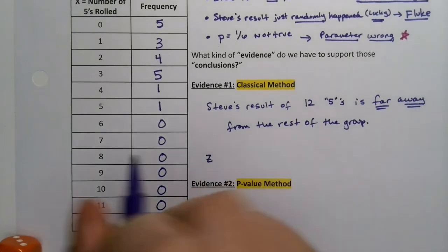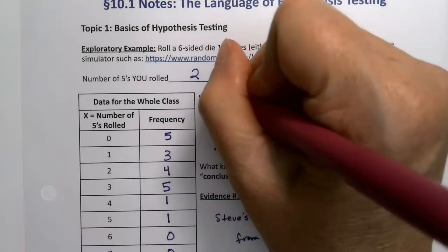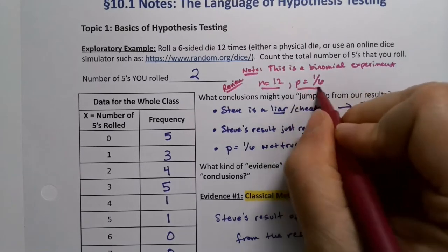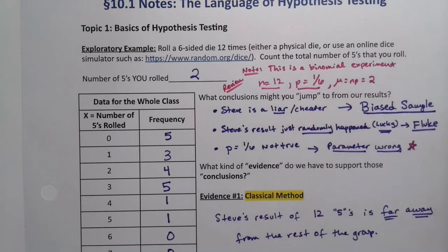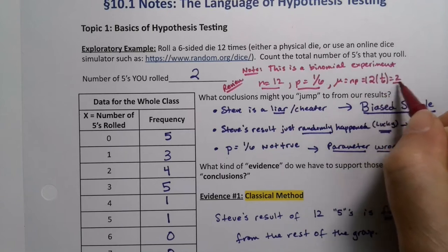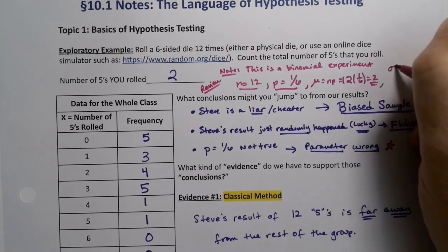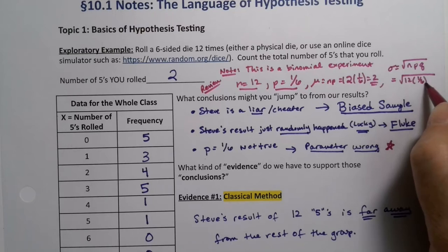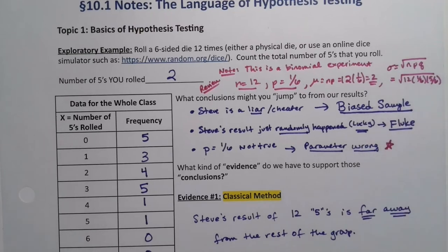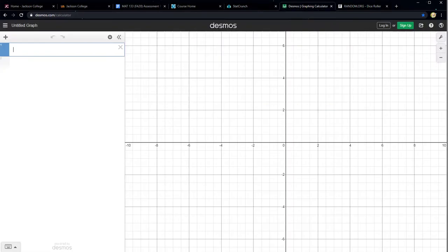In fact, his Z score, we could even find, in case you wanted to know. This is a little review. It never hurts to review the binomial. If you remember, if N is 12 and P is 1/6, then the mean is NP, which would be 12 times 1/6, which would be 2. And the standard deviation is the square root of NPQ. So that would be the square root of 12 times 1/6 times 5/6. And if we grab a calculator, square root of 12 times 1/6 times 5/6, there you go, 1.29. So that standard deviation is 1.29.